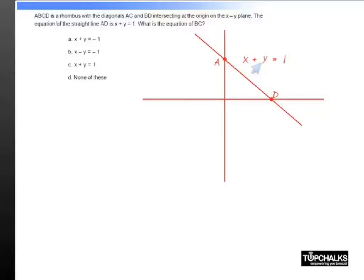Now since the other opposite side BC must also be parallel to it, it must also be of the form X + Y equals some value, because any other equation that is parallel should also be X + Y equals a constant. And since we have been told...